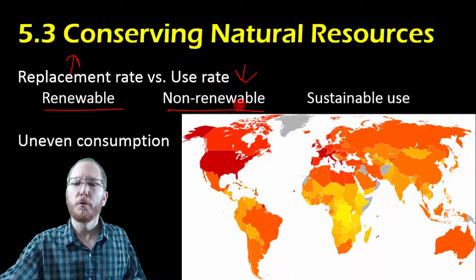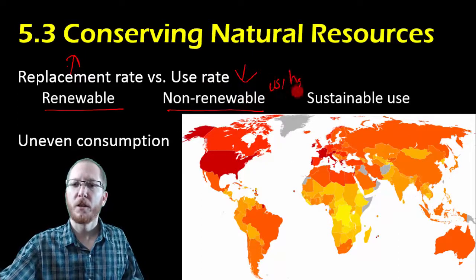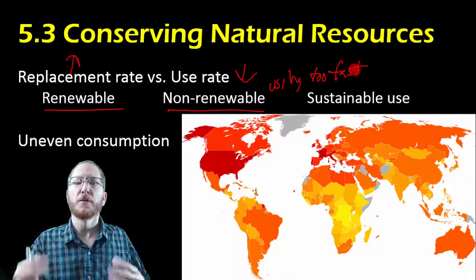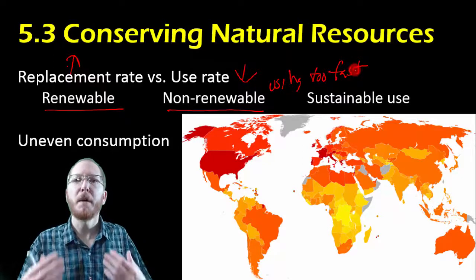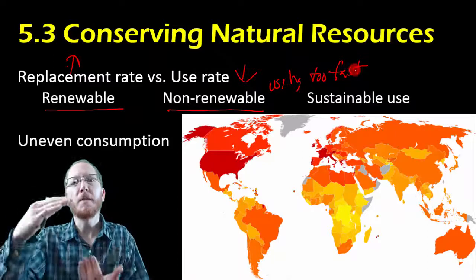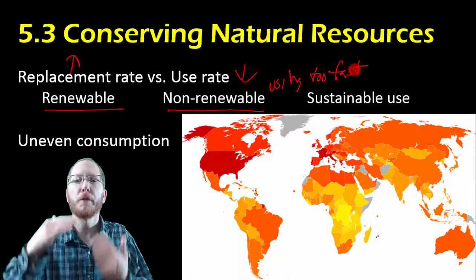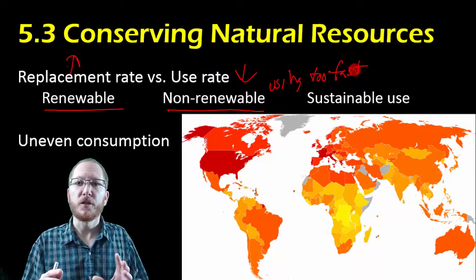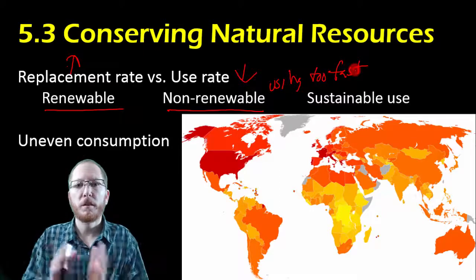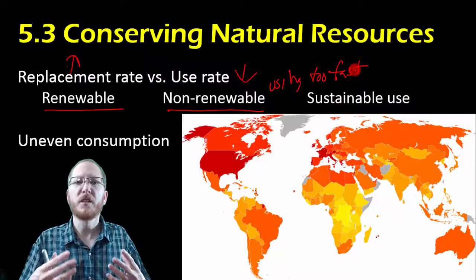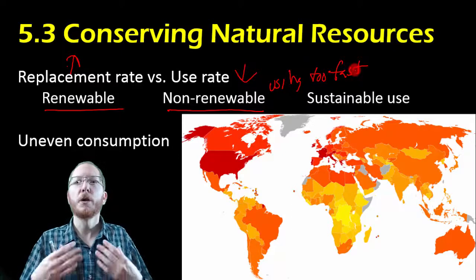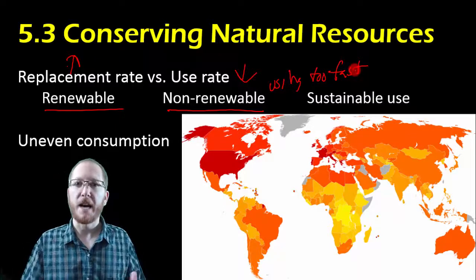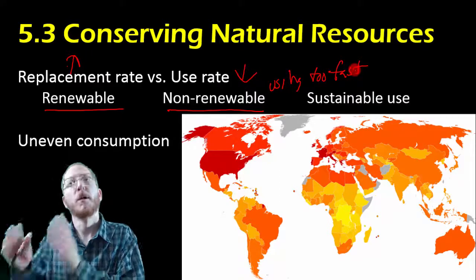For a non-renewable resource, we're using it too fast. This doesn't mean it can't be replacing itself — it's just not replacing itself fast enough. It's like having money in your bank account but spending more than you earn; your account keeps shrinking, which is not a stable long-term arrangement. Keep in mind, if our use rate changes, a resource can move from renewable to non-renewable. Trees are only renewable if we're not using them faster than they can be grown.